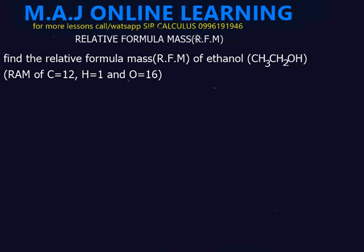So relative formula mass is the sum of relative atomic masses of atoms in the numbers showing in the formula. The relative formula mass is calculated by adding up the relative atomic mass of each element.